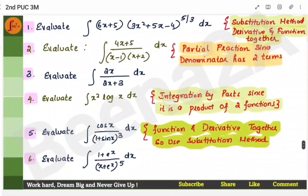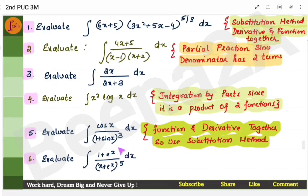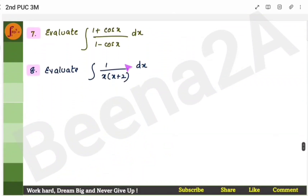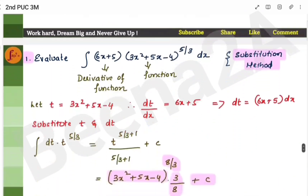Here is a list of three-marker problems for practice. These are example problems — by working through them, you should understand which method to apply and how to solve. The first uses substitution, the second partial fractions, the third requires adding plus 3 and minus 3, the fourth uses parts, the fifth substitution, and the last partial fractions.